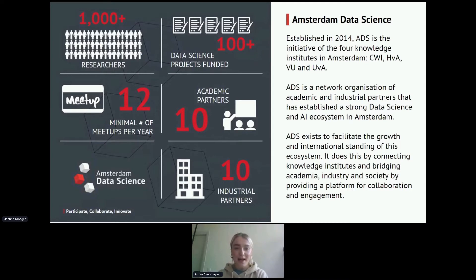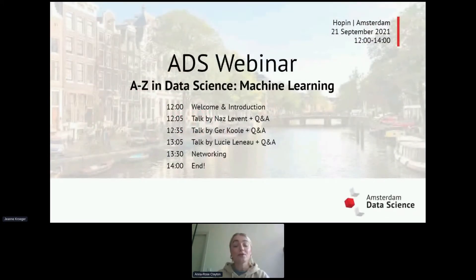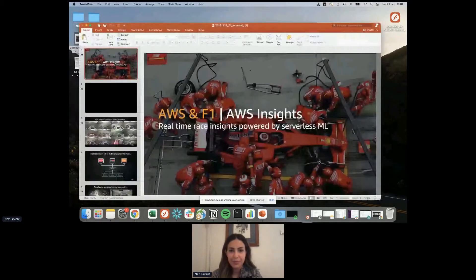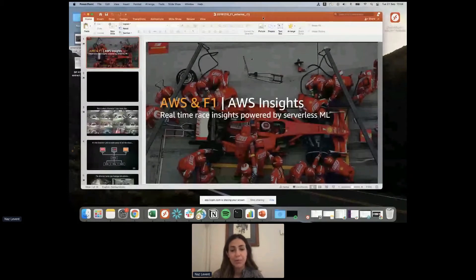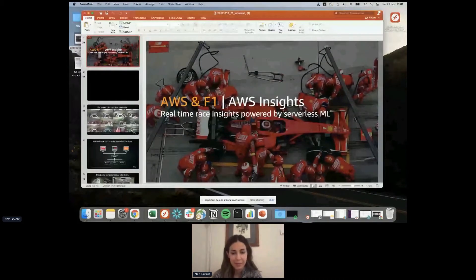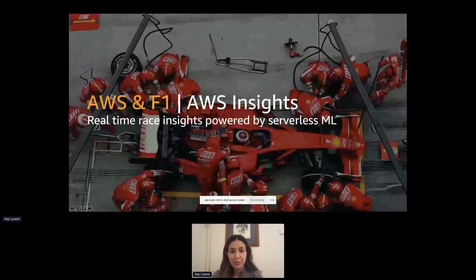That's what we do at Amsterdam Data Science. I would now love to introduce our first speaker, Naz Levant. Thank you for joining today. I will walk you through a project we delivered to Formula One in 2019 on AWS Insights, and I will mainly focus on the battle forecast project that we have done for them. Before I get into the whole project, I would like to show you a video so you can see how the final output looks like.